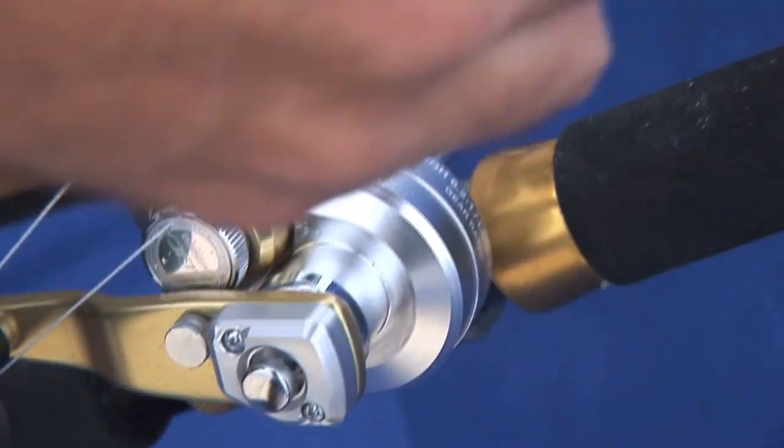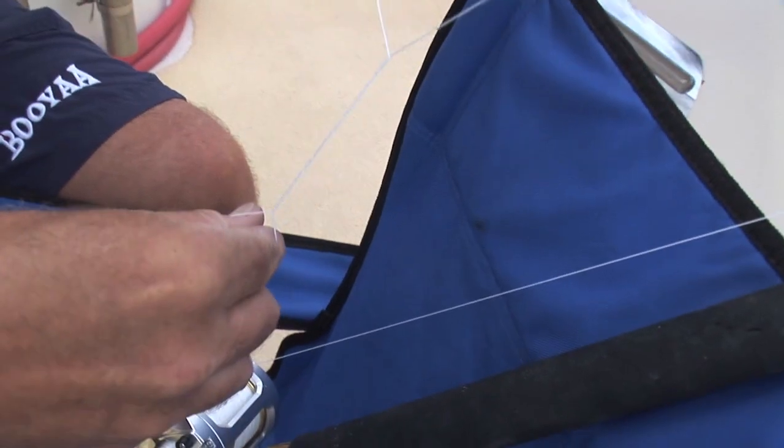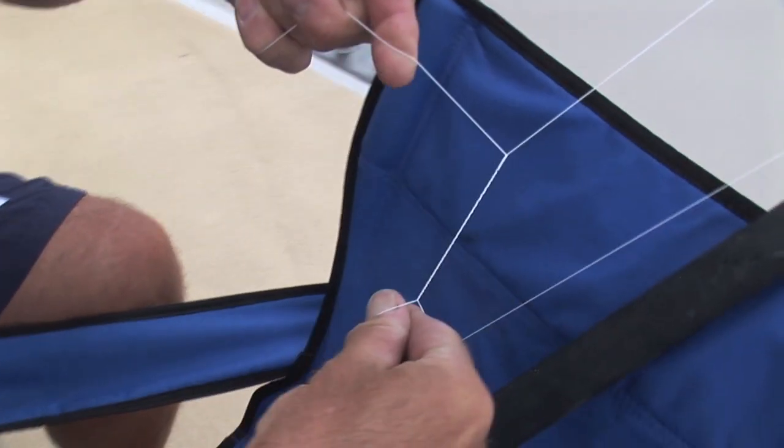Simply run this up to where you want the loop. And you're holding onto your tag end like that. Once you've got it, slide it down like that.